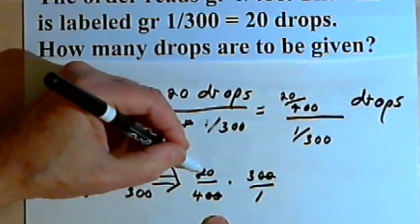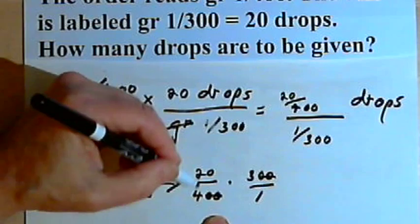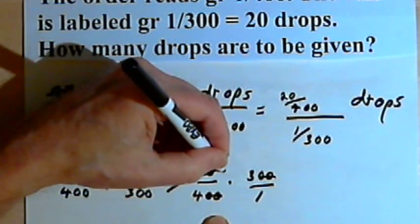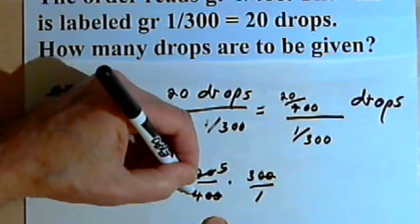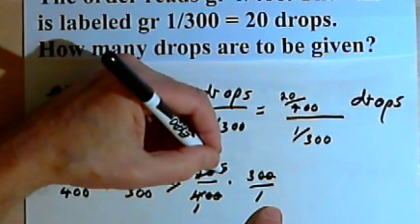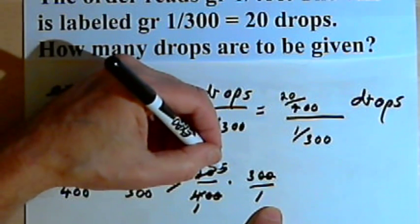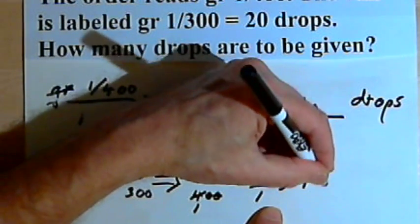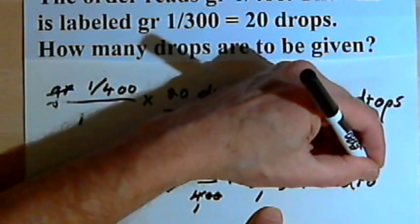And I've got a 20 over 4, well I can divide both of those numbers by 4. 20 divided by 4 is 5. And 4 divided by 4 is 1. So my denominators are just 1, so I can just multiply the numerators. That's 5 times 3. So I'm going to get 15. And that's drops.